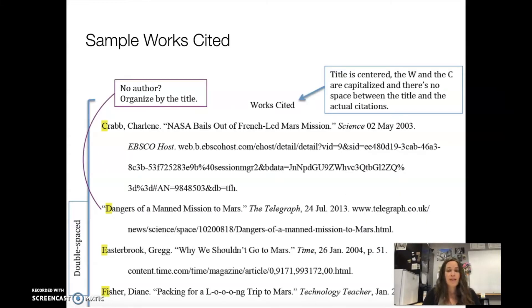So here's a sample Works Cited, and let's go over some of the things that are important, starting with the title. The title should be Works Cited with an S at the end, Works Cited, because you will likely be citing multiple works. If you only have one work to cite, then you can call it a Work Cited without the S, but most of the time you will have multiple sources to cite, so you'll want to call it a Works Cited. Also the title itself is centered at the top of the page, and the W and the C are capitalized because it's a title. There's also no space between the title itself and the start of the actual citations.